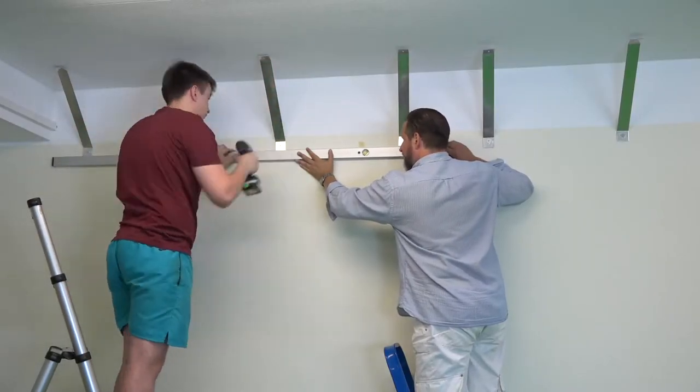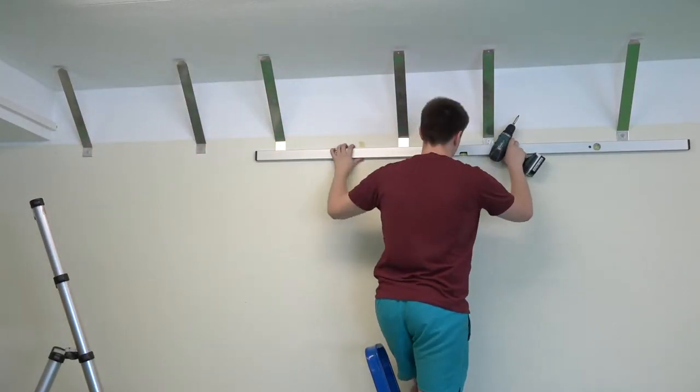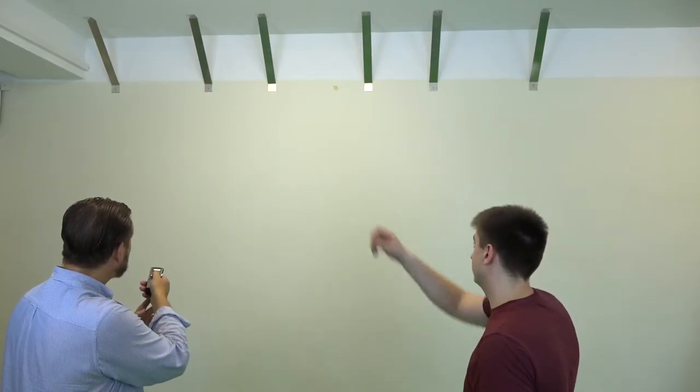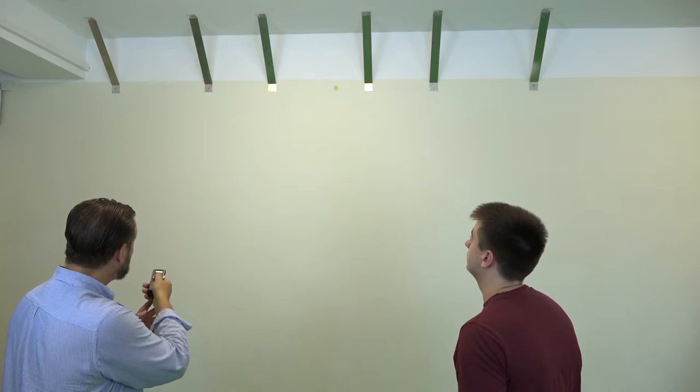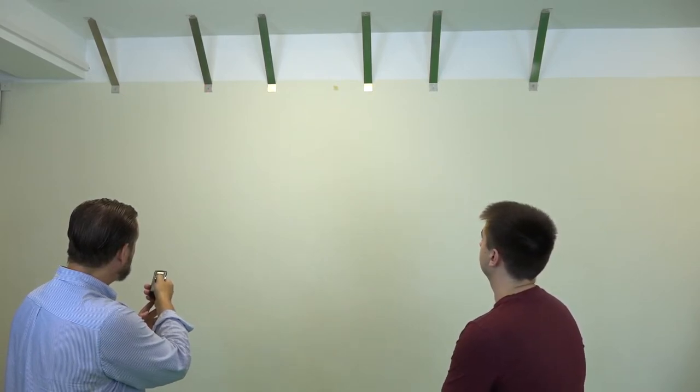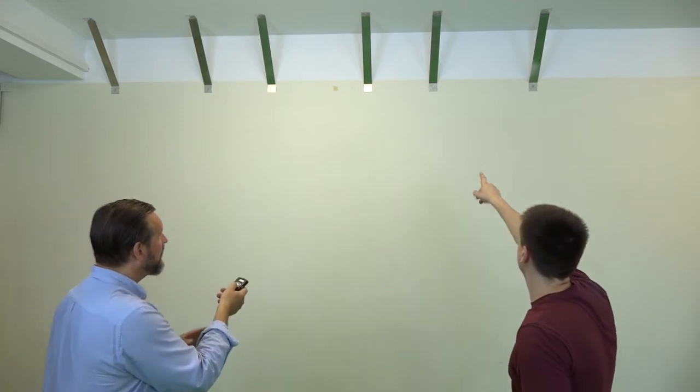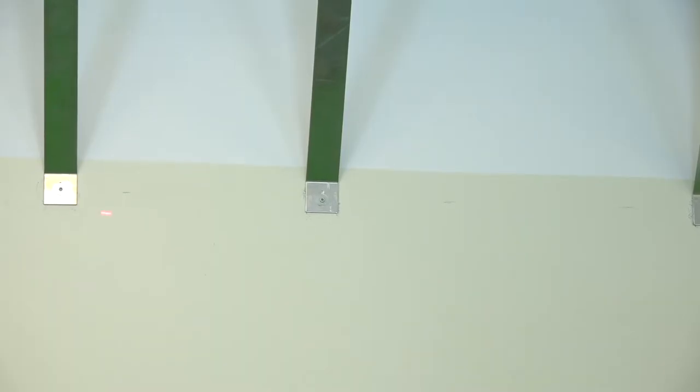So we screwed the screws in and then put on the leveler again so we could get them all on the same height. These holes behind the washers, behind the screws here, they are rectangular so you can push them up and down. With the leveler, we made sure that the bottom of all these mounts were on the same line.